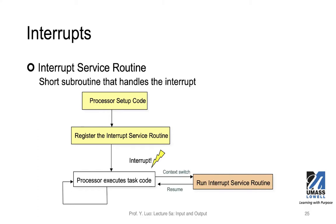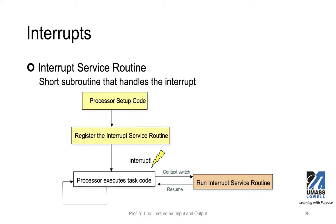Basically two things are happening concurrently. We have the processor doing some setup code for its main application — setting up GPIO registers to turn on and off LEDs, or other things the main application is supposed to do. Then it will also register the interrupt service routine. This step differs from microcontroller to microcontroller depending on how the processor architecture is designed, but you need to let the microcontroller know this is your interrupt service routine for this particular interrupt.